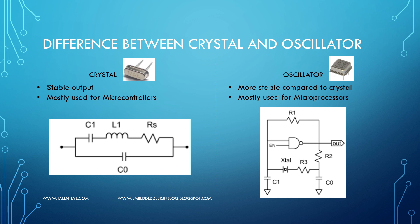The power pin is the enable pin for which we provide power, and the output is where you take the signal. There is an internal crystal inside the oscillator, along with the ground. So three pins are required: enable, ground, and output. The crystal is inbuilt into the oscillator with additional circuitry, whereas in a microcontroller the corresponding circuitry is inside the microcontroller itself.